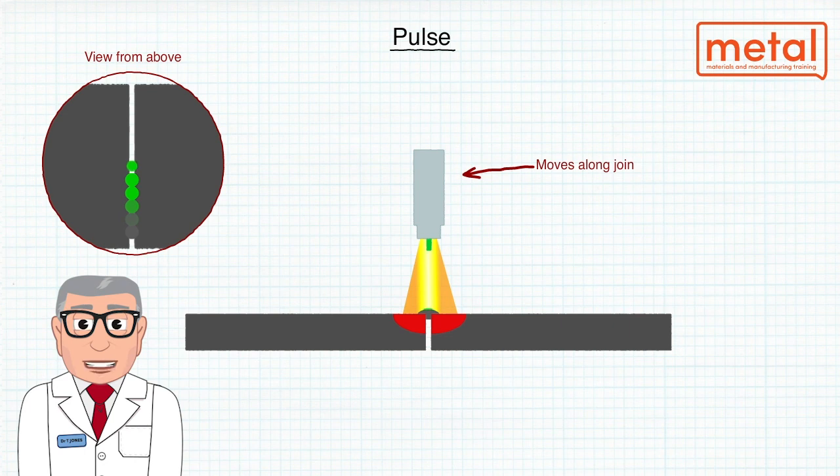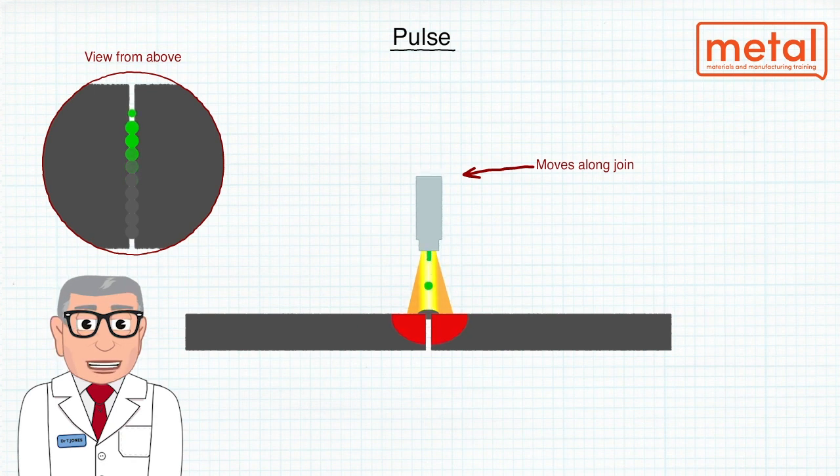The low level current is sufficient to maintain the arc. It allows the welding of thin materials and uses 85 to 90% argon rich shielding gases.